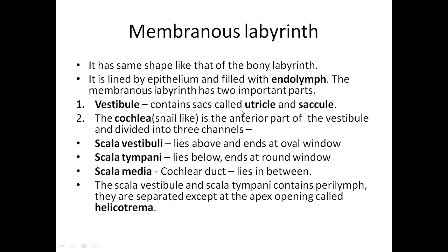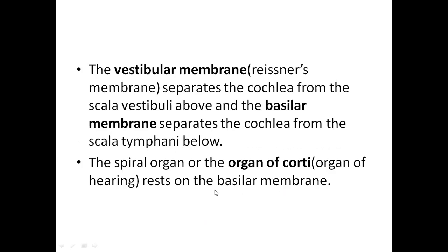The vestibule is made up of the utricle and saccule. The cochlea is a snail-like structure, and on cross-section you can see three different chambers. These three chambers are separated but connected at a point known as the helicotrema. The first chamber is the scala vestibuli — its basal membrane is known as the vestibular membrane (Reissner's membrane) — and the membrane above the scala tympani is known as the basilar membrane.